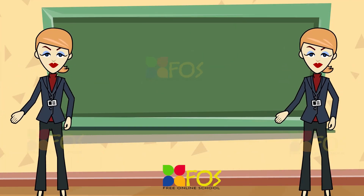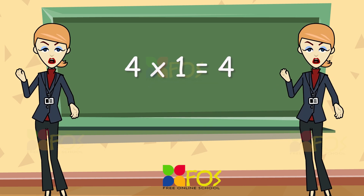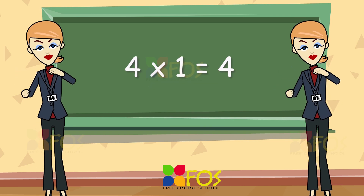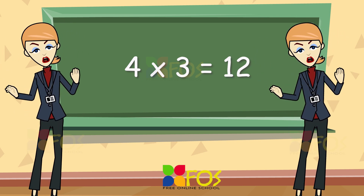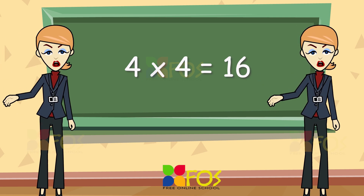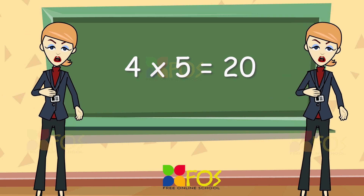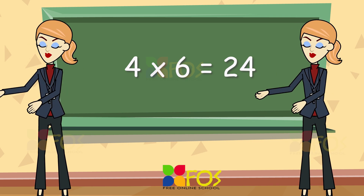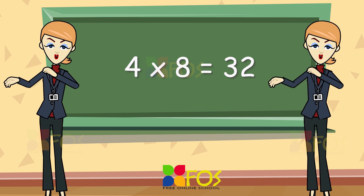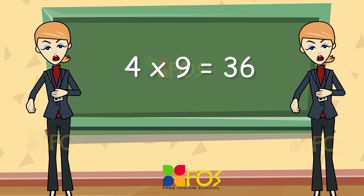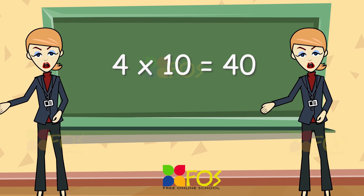Here is the table of four. Four ones are four. Four twos are eight. Four threes are twelve. Four fours are sixteen. Four fives are twenty. Four sixes are twenty-four. Four sevens are twenty-eight. Four eights are thirty-two. Four nines are thirty-six. Four tens are forty.